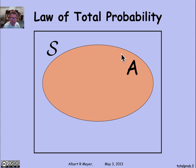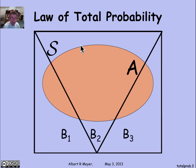Now suppose that I have three sets, B1, B2, and B3, that partition the sample space. That is, B1, B2, and B3 don't overlap. They're disjoint, and everything is in one of those three sets.